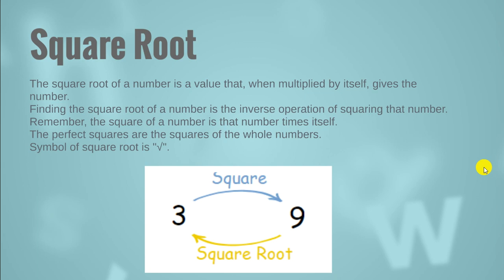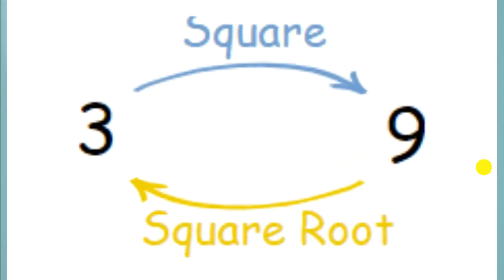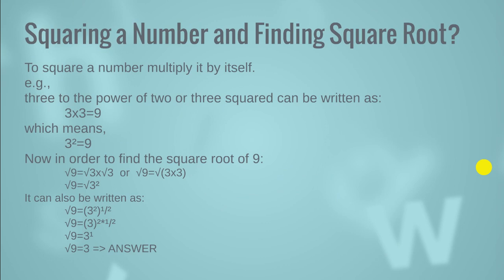The perfect squares are the squares of the whole numbers. The symbol of a square root is the radical sign. In this example, the square of 3 is 9 — as you solved previously — and the square root of 9 is 3, meaning it works vice versa. When you find the square of a number, that number is the square root of the squared result. The square of 3 is 9 and the square root of 9 is 3.